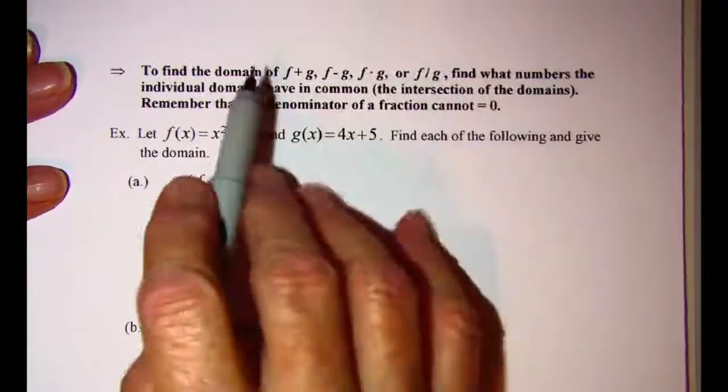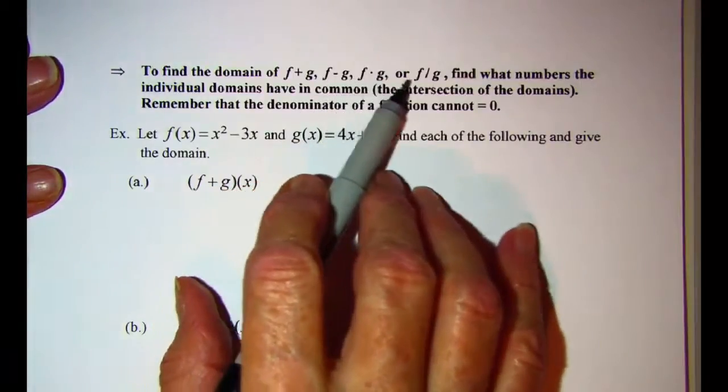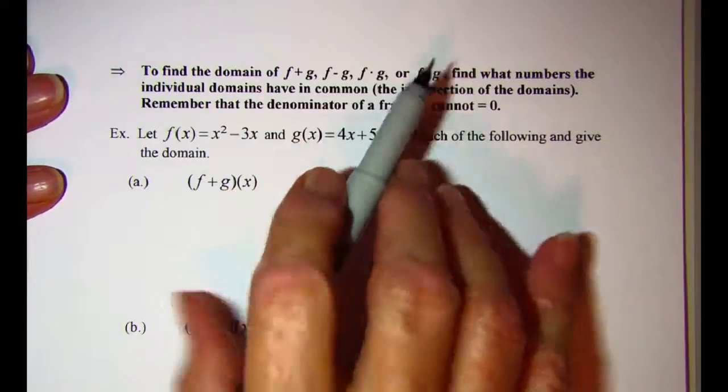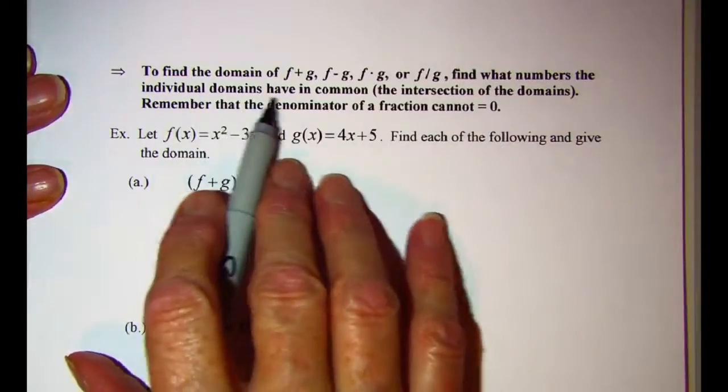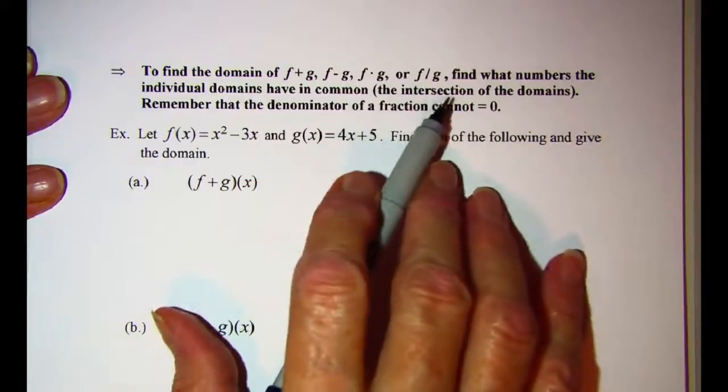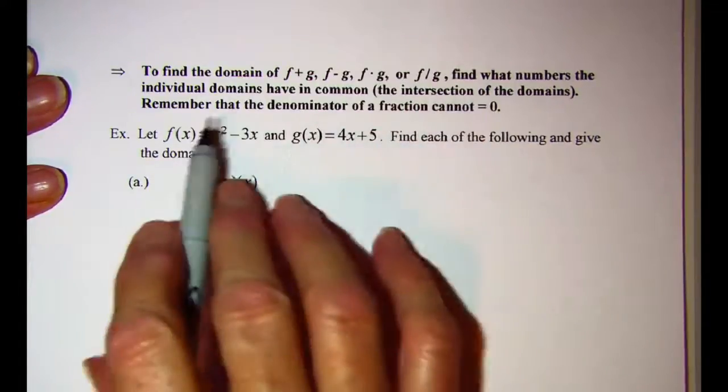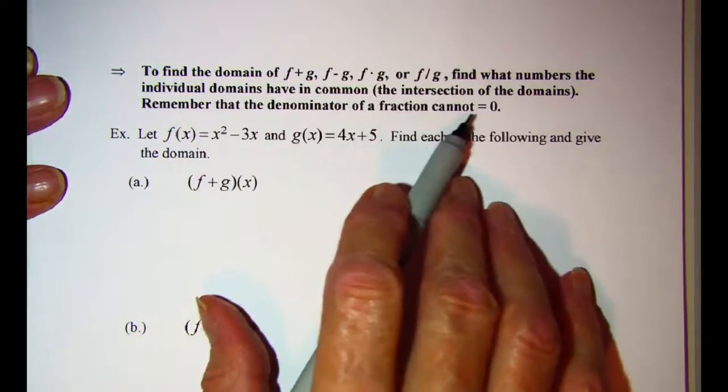To find the domain of f plus g, f minus g, f times g, or f divided by g, find what numbers the individual domains have in common—that means the intersection of their domains—and then remember that the denominator of a fraction can't be equal to zero.